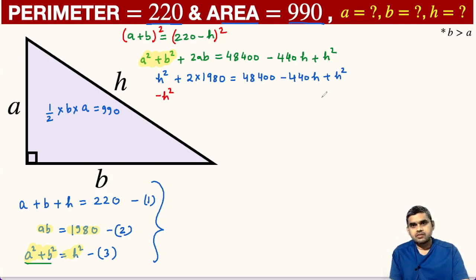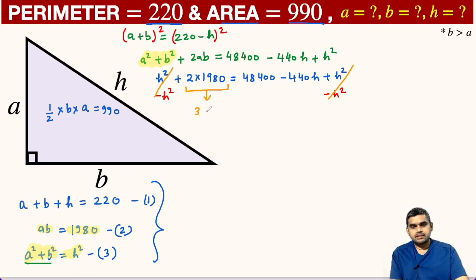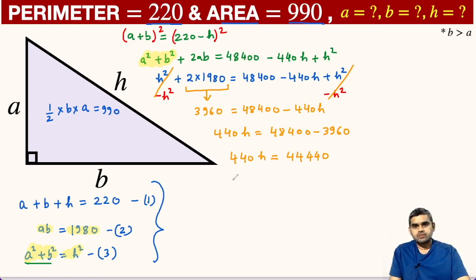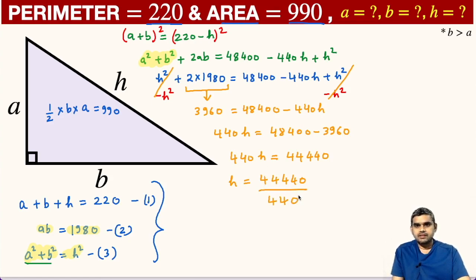Now we subtract H squared from both sides, so the H squared terms cancel. This gives us 3960 equals 48400 minus 440H. Rearranging, 440H equals 44440. So H equals 44440 divided by 440. Simplifying — dividing by 44 — we get H equals 101 units.